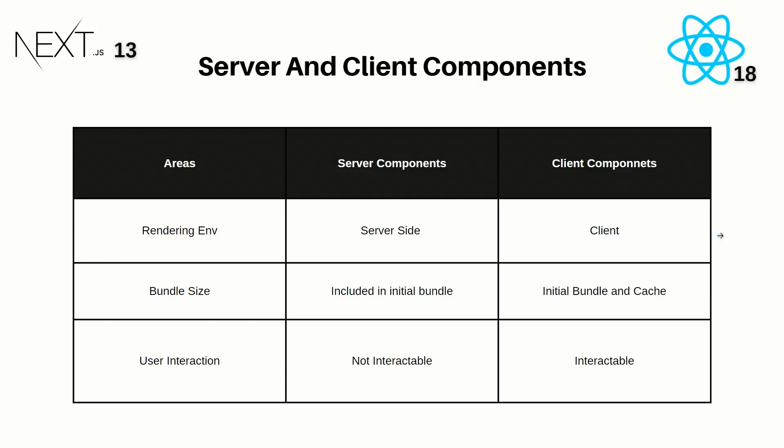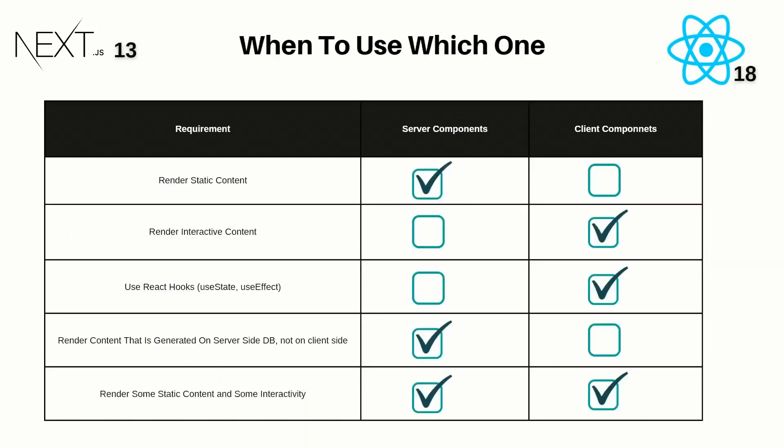Let's see what to use when. If you have a requirement to render static content, then server components are the best option — like the initial HTML homepage of your application that won't have any dynamic content. Server components would be the optimal choice for that, and you wouldn't need client components for static rendering.